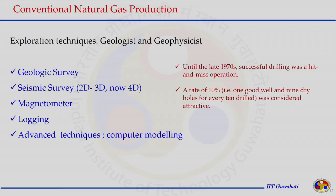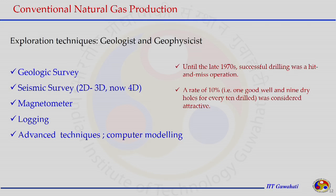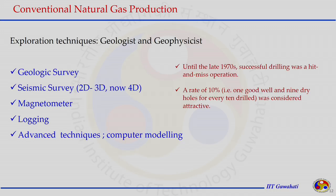Advanced techniques like computer modeling are being developed with more precision in predicting natural gas resources. The success rate improved from 14% in the 1970s to 49% in 2000, and continues to advance with improvements in exploration technology and decision-making processes for where to drill.